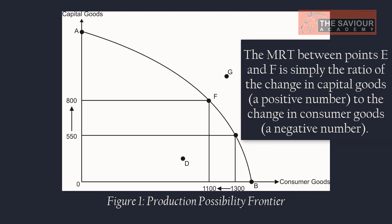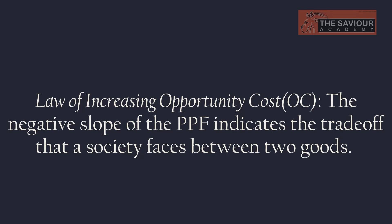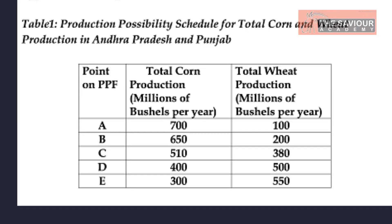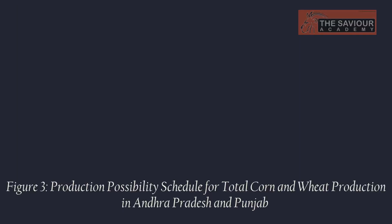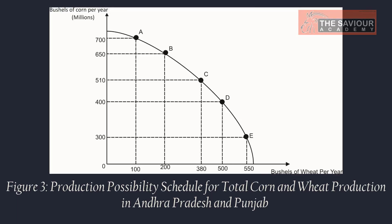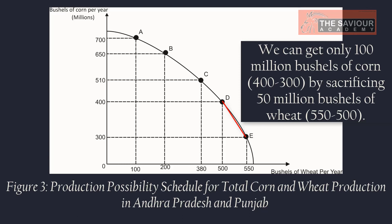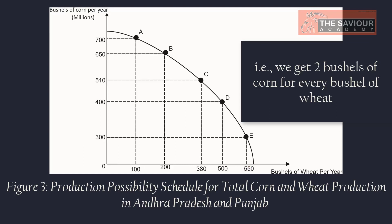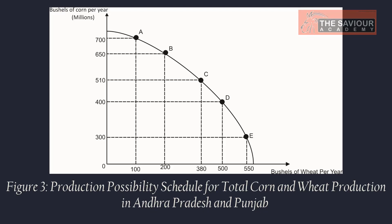The negative slope of the PPF indicates the trade-off a society faces between two goods. Looking at the trade-off between corn and wheat, Table 1 shows the production possibility schedule for total corn and wheat production in Andhra Pradesh and Punjab, plotted in Figure 3. Moving from point E to D, we can get 100 billion bushels of corn (400 minus 300) by sacrificing only 50 bushels of wheat (550 minus 500) — that is, 2 bushels of corn for every bushel of wheat. However, we are already stretching the land's ability to produce corn, so it becomes harder to produce more and the opportunity cost increases.